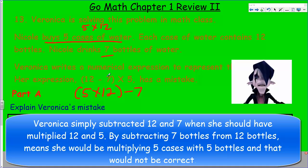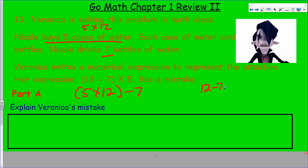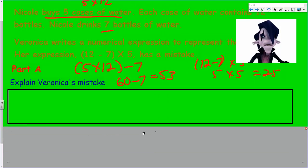We have to explain her mistake. She put 12 minus 7, she took seven away from the 12 bottles, which was fine, but if 12 minus 7 is 5, now you're trying to take that 5 and multiply it by the five cases. That's not correct because you have basically five full cases of water. 12 minus 7, then times 5, you get 5, you're going to end up with 25 when our answer should be 60 minus 7 which is 53. There's a huge difference.